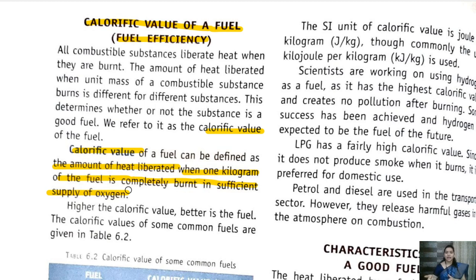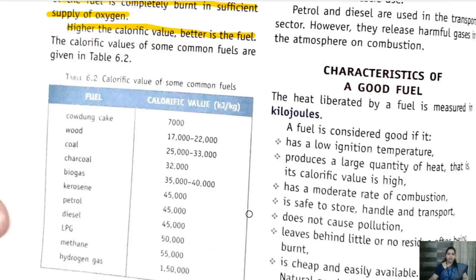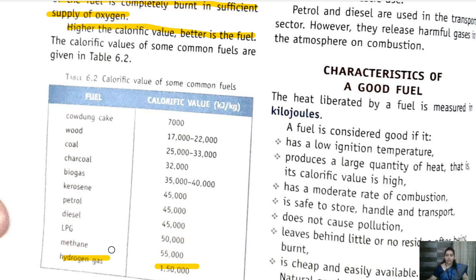Higher the calorific value, better is the fuel. Here is the list of fuels and their calorific values. The best fuel here is hydrogen gas, having the highest calorific value. But we don't generally use hydrogen gas as we cannot easily collect it, and there are certain disadvantages — scientists are still working on it.